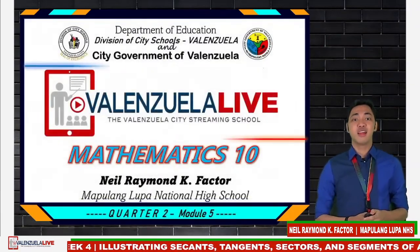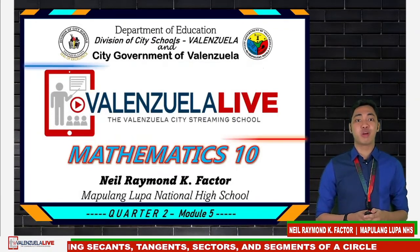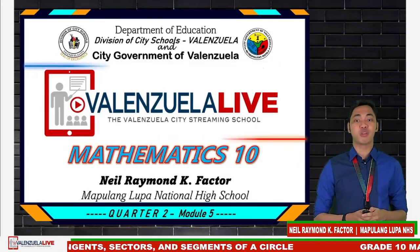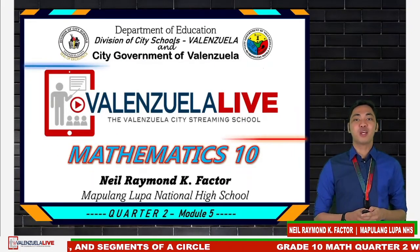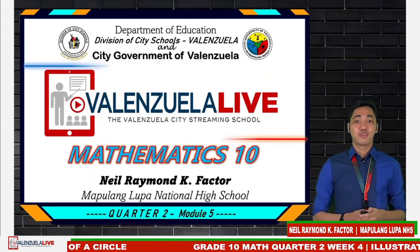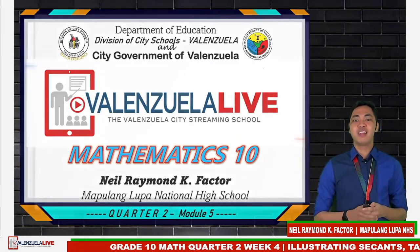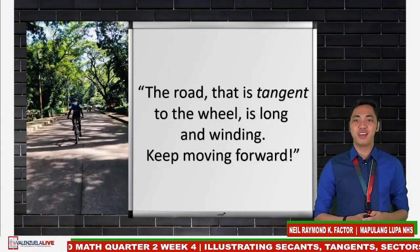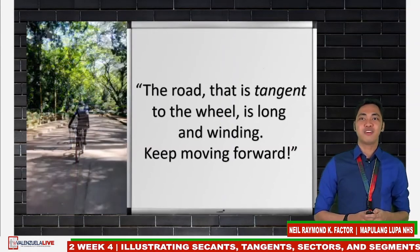Thank you for those questions. Let us take note that tangent and secant touch the circle at a certain point. We also have tangents and secants in our lives — they touched us and made an impact in our everyday living. They are those people whom we consider special to us, like our family, friends, and so on. Make sure to pick the right tangent and secant, for they may make or break you as a person. For your home learning task this week, please answer the what's more part of module number 5. This has been another Valenzuela Live session on Mathematics 10. I am Sir Neil Raymond K. Factor from Mapulang Lupa National High School — the road that is tangent to the wheel is long and winding. Keep moving forward. See you next week and have a nice day.